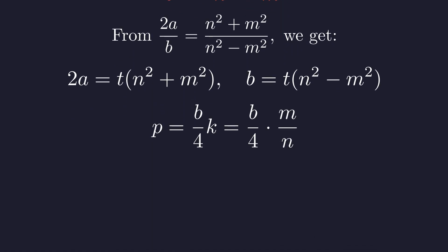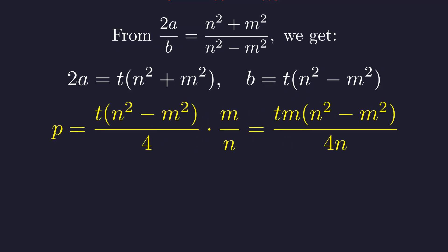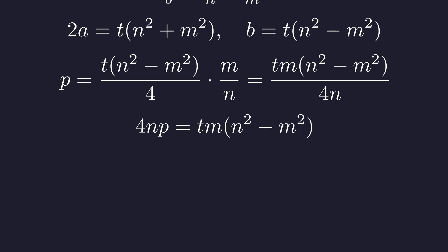Now let's substitute back into our original equation for p. Substitute our expression for b. Multiply both sides by 4n to clear the fraction. This is our key Diophantine equation. For p to be prime, we need very specific values of m, n, and t. The prime factorization on both sides must match exactly.